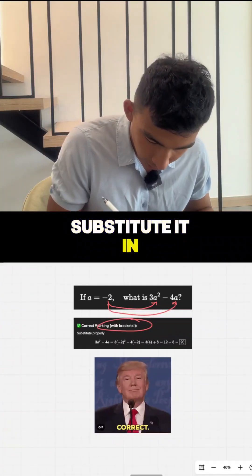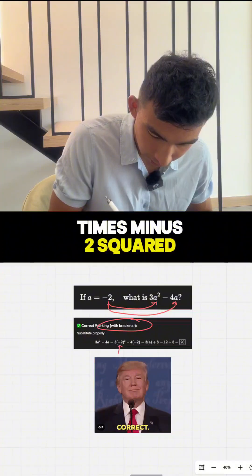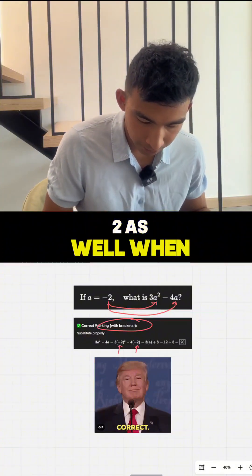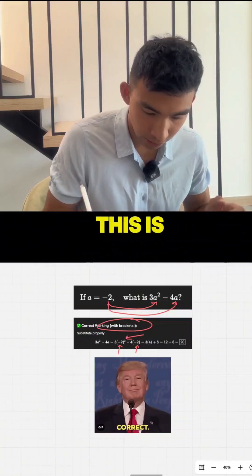When you substitute it in, when you put that minus 2 in for a, it's going to be 3 times minus 2 squared, minus 4 times minus 2 as well. When you simplify this, that minus 2 squared here, this is going to give you a positive 4.